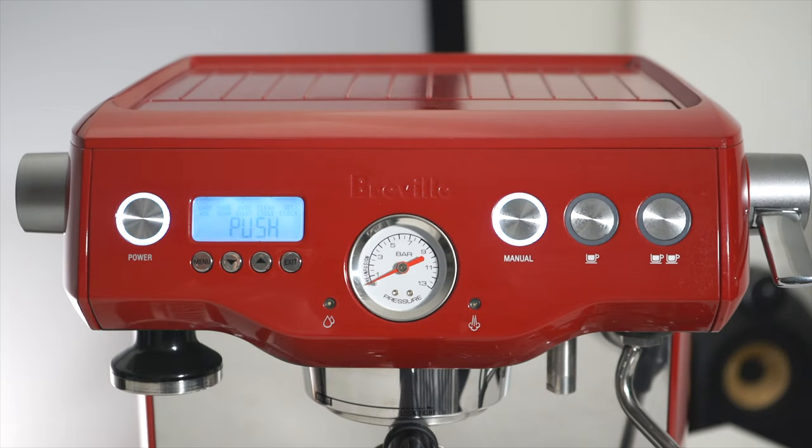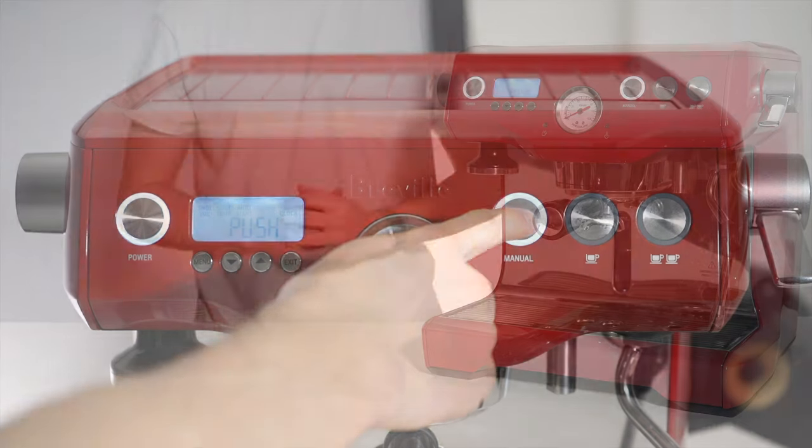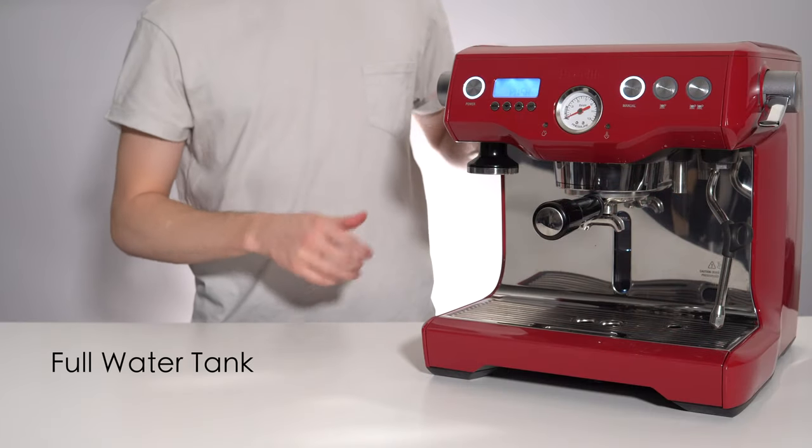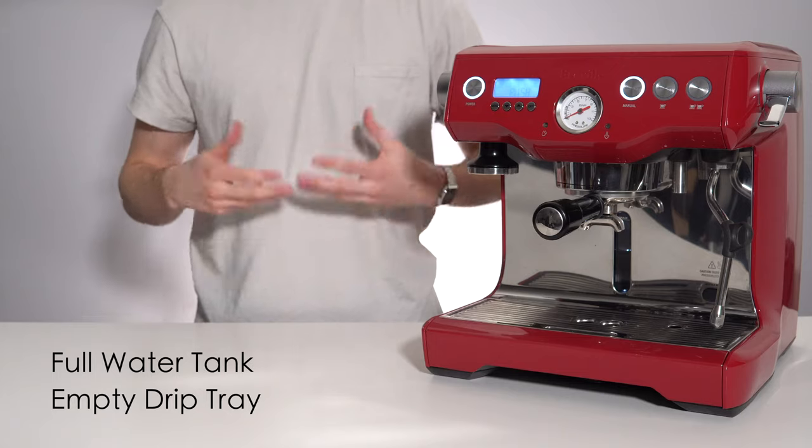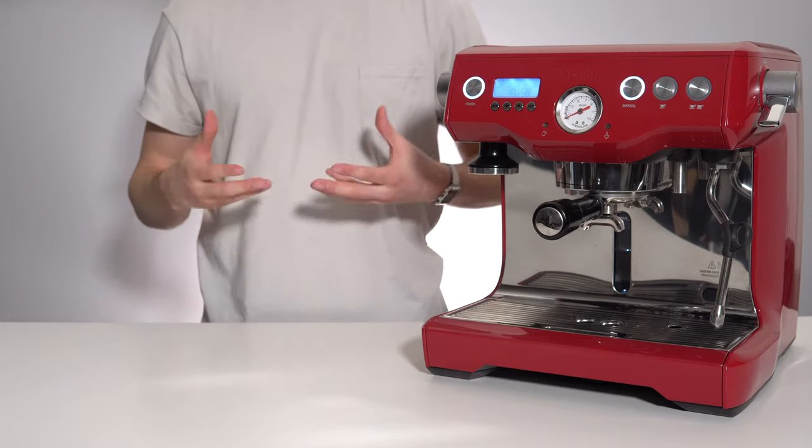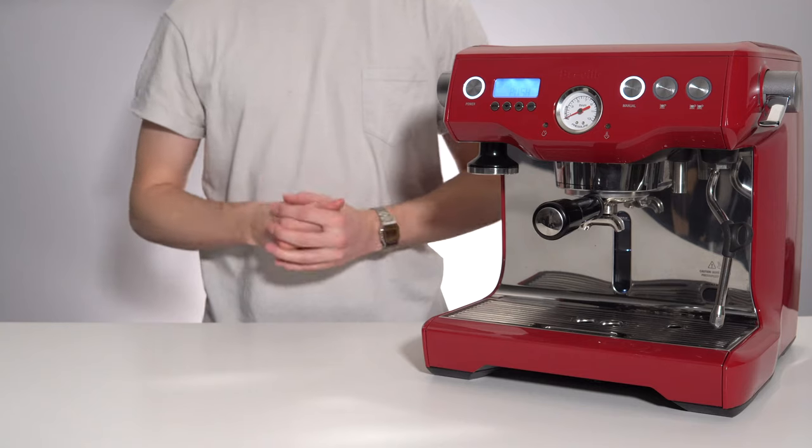Once you have reached the clean cycle option, it will simply say push and the manual button will be illuminated. Make sure that your water tank is full and your drip tray is empty, and then proceed to push the manual button. This will start the cleaning cycle which will take a few minutes to complete.